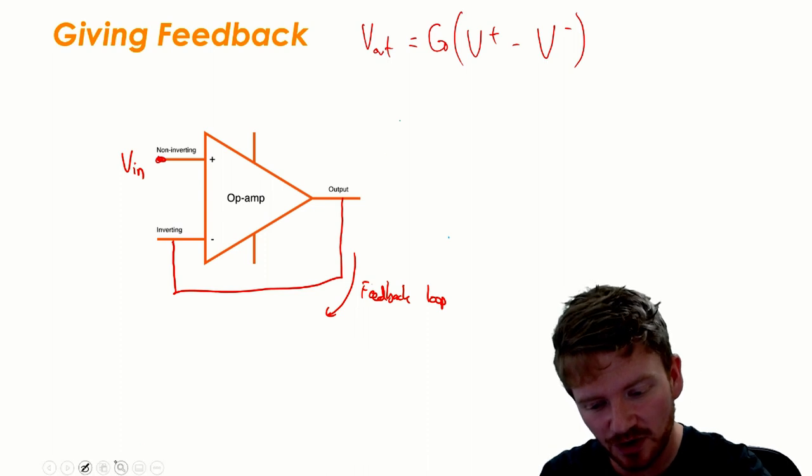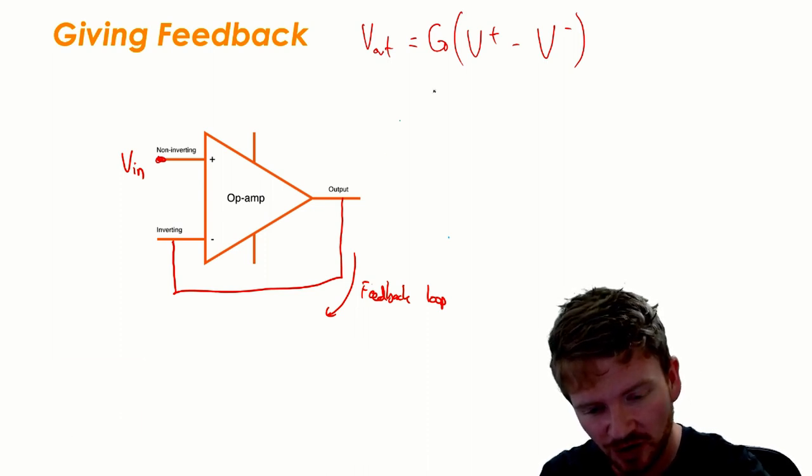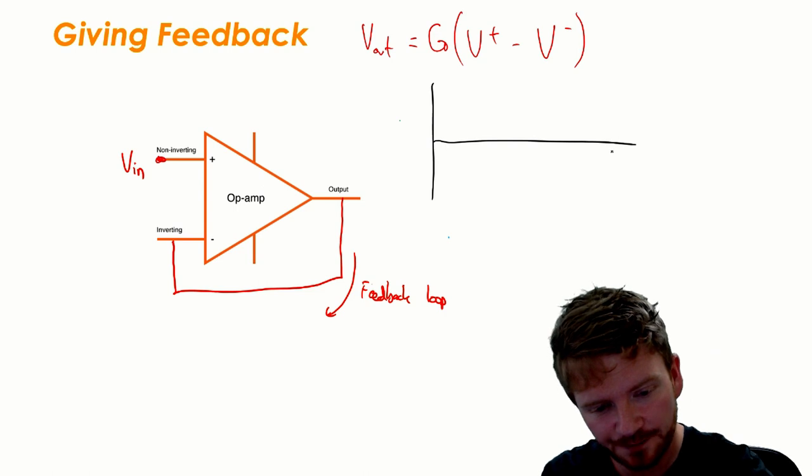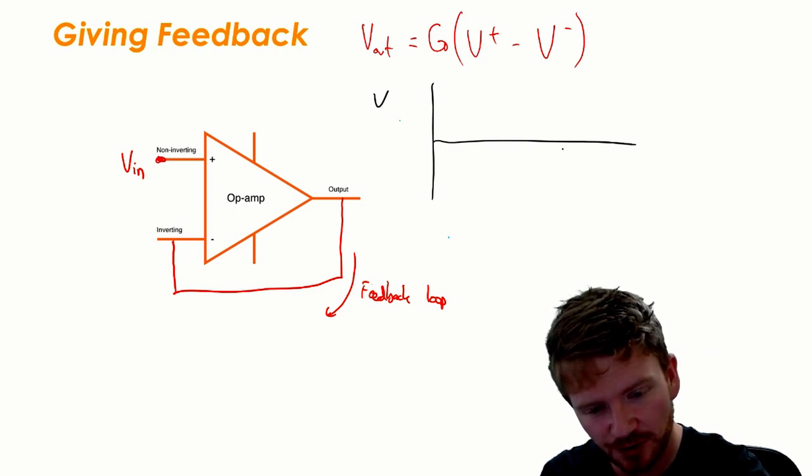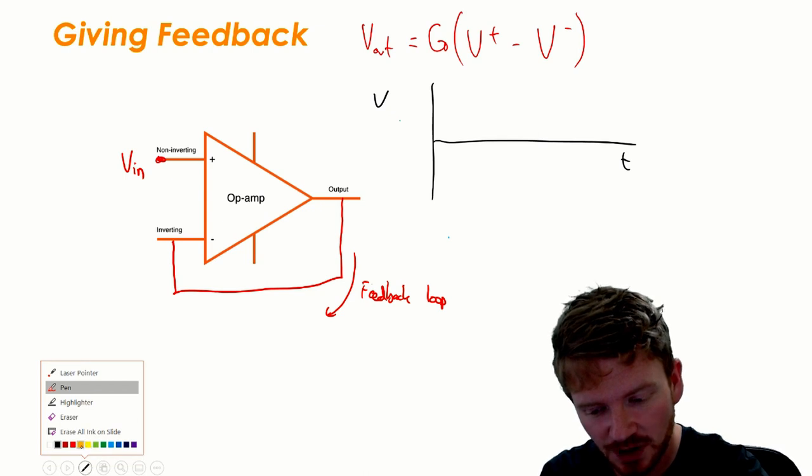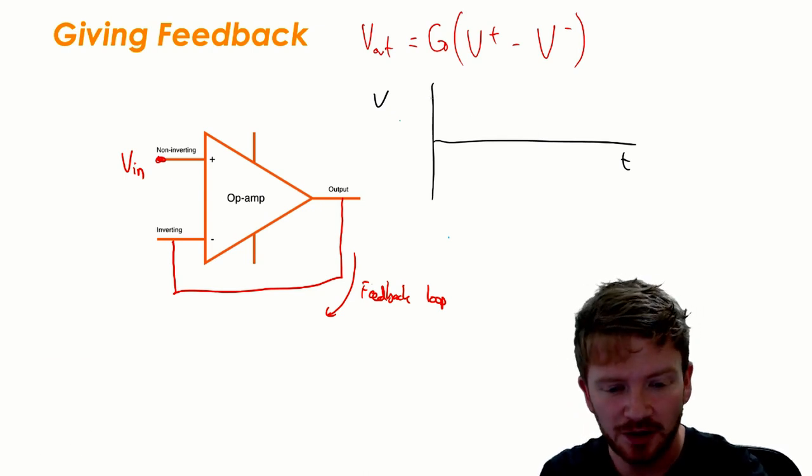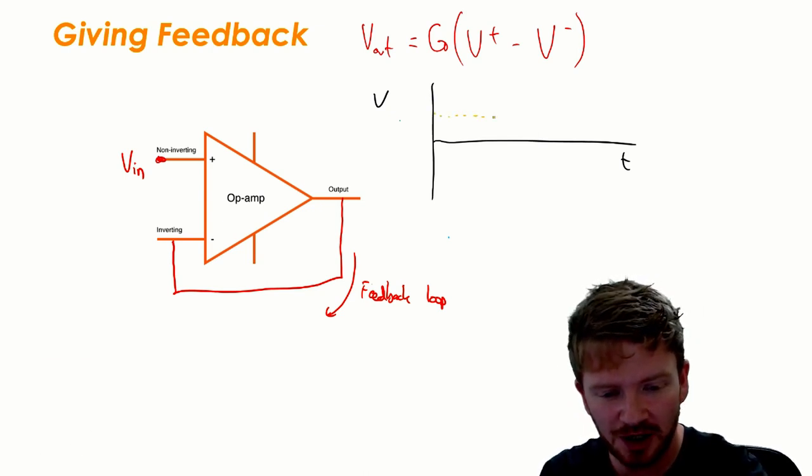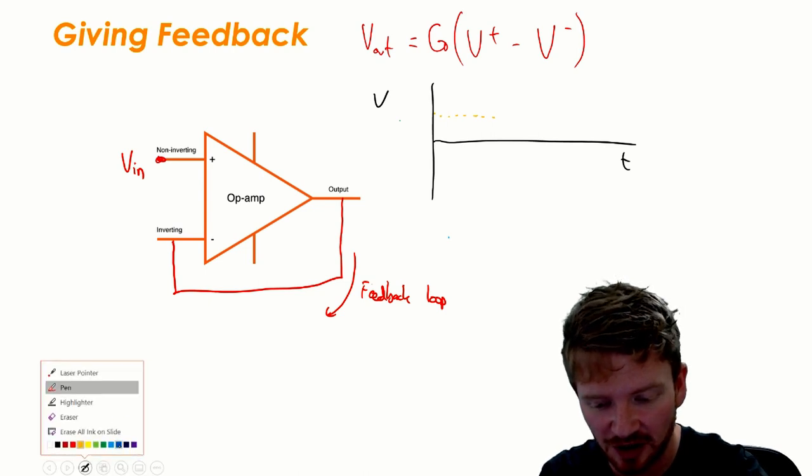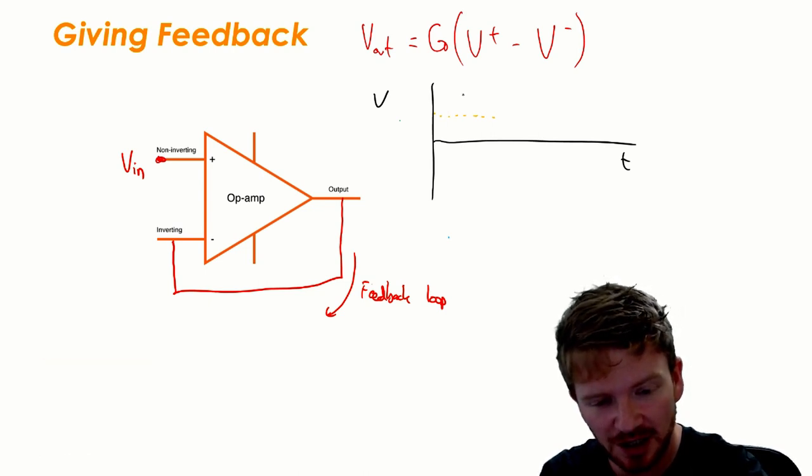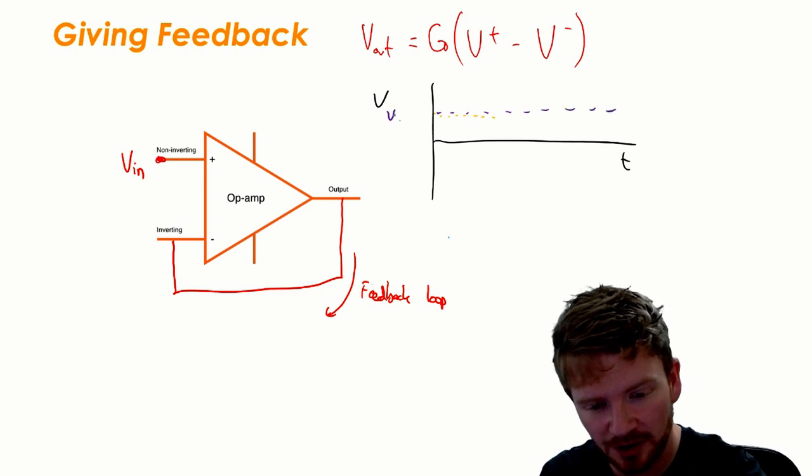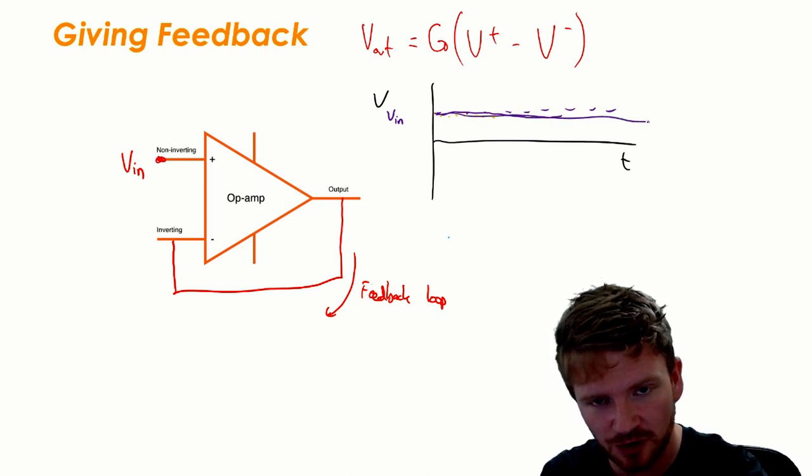So to get started we're going to think about a graph of voltage or potential difference against time. And I want you to imagine that I'm going to put a level along here that will be V in. So the potential of V in for now we're going to make constant. It's a straight line.